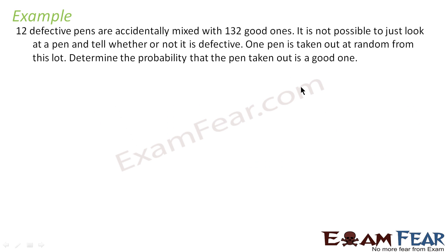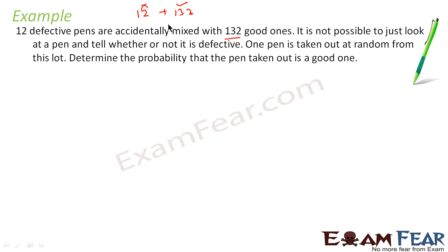12 defective pens are accidentally mixed with 132 good ones. It is not possible to just look at a pen and tell whether it is defective or not. One pen is taken out at random from this lot. There are 12 defective pens and 132 good pens, so in total we have 144 pens — both good and bad. From this lot, one pen is taken out.